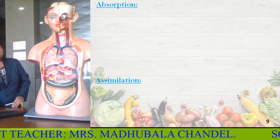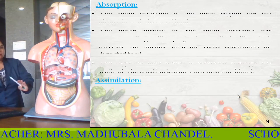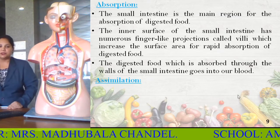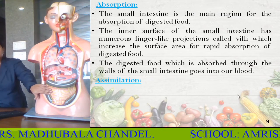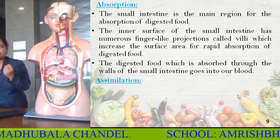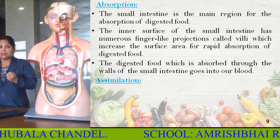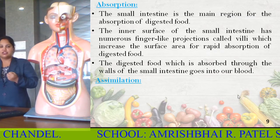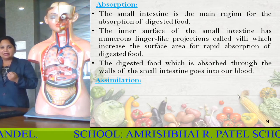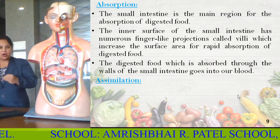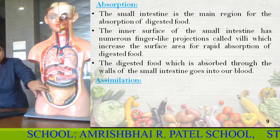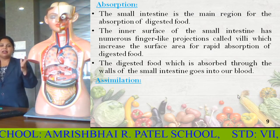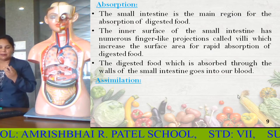Digestion is completed now. The next step is absorption. The small intestine is the main region for the absorption of the digested food. The small intestine performs complete digestion, and the next step is absorption. How does it absorb? The inner surfaces of the small intestine have numerous finger-like projections called villi.